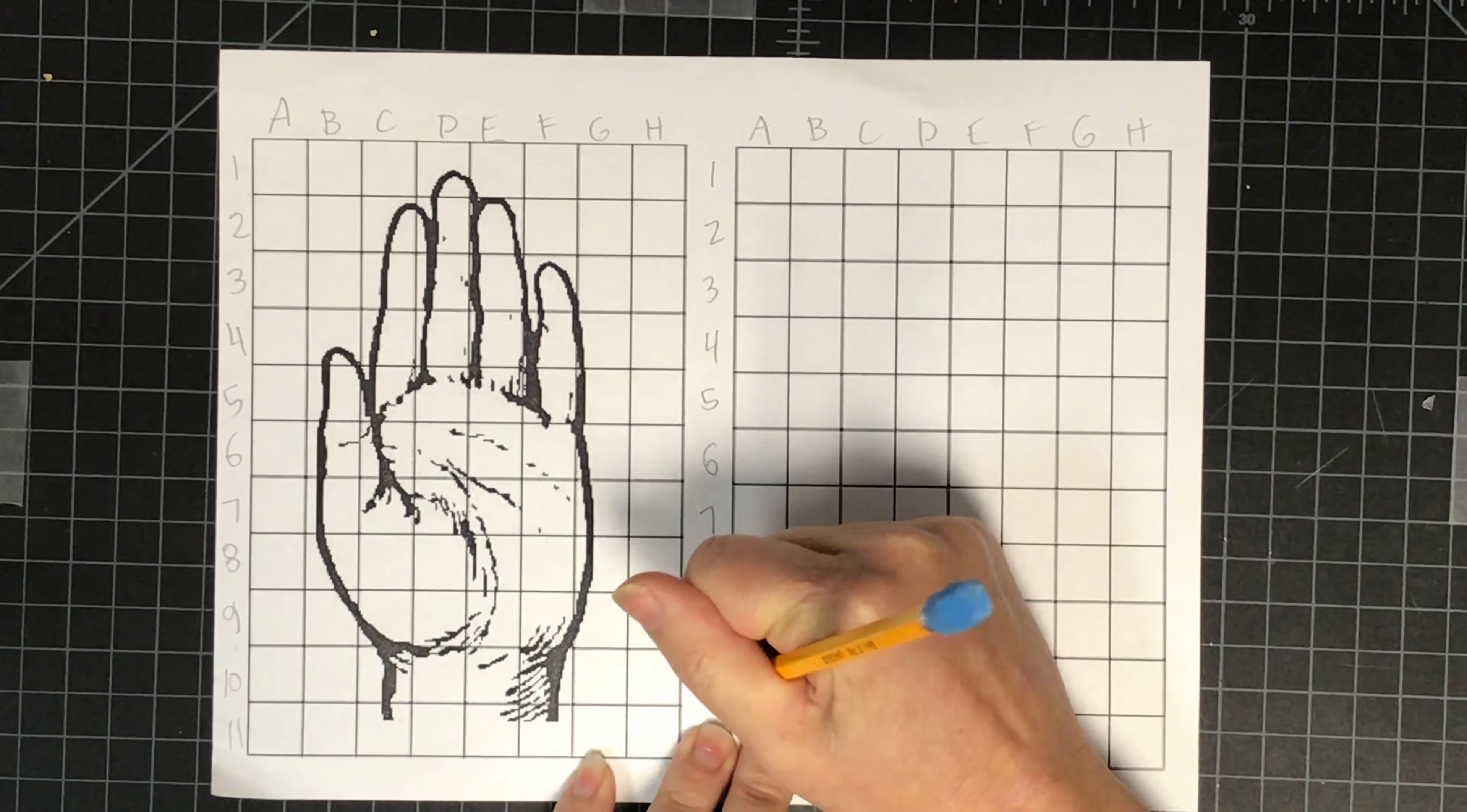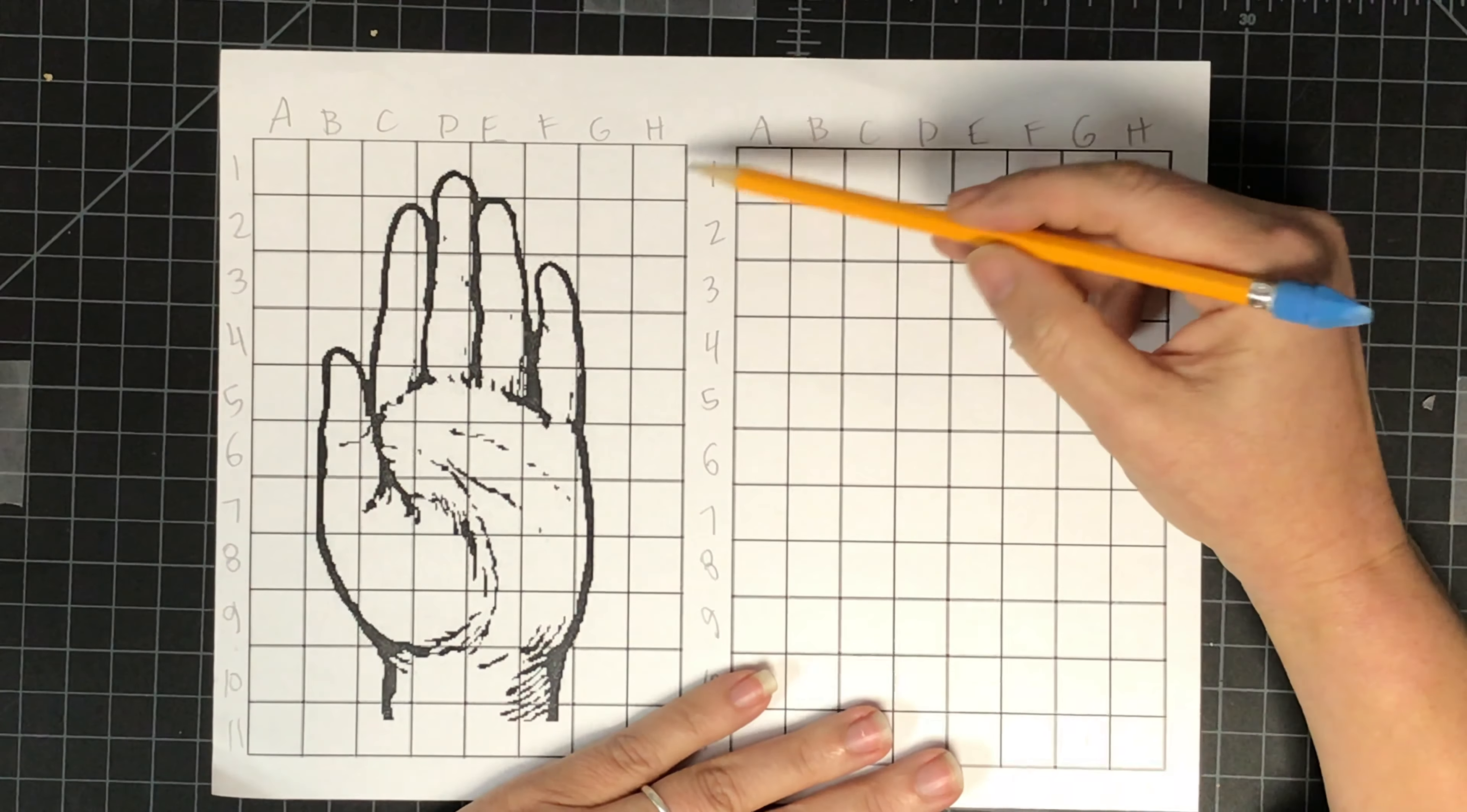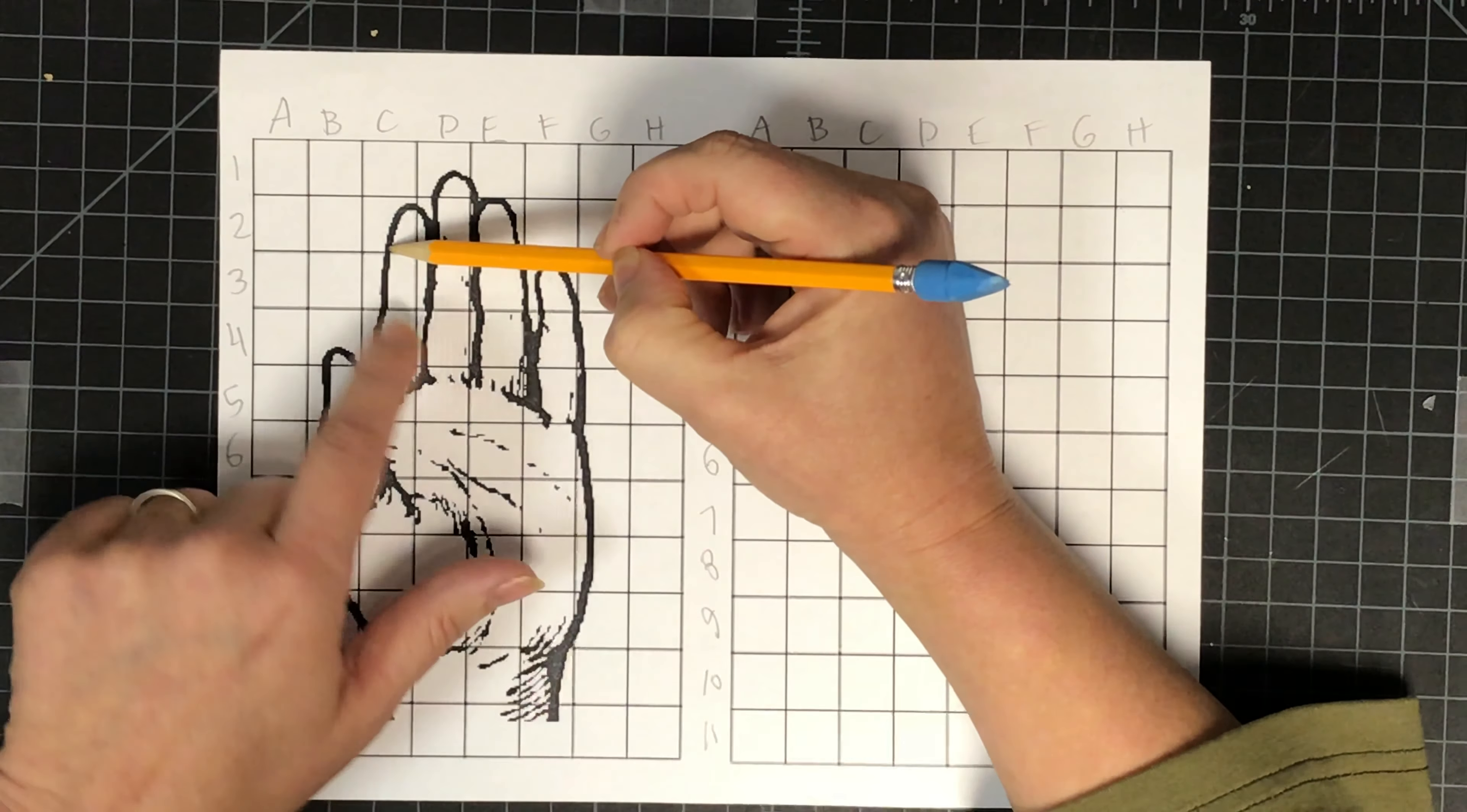Basically what you're doing is using your letters and numbers as reference to figure out what part of the drawing you're drawing, and then you're going to transfer it into the same location on your other grid.